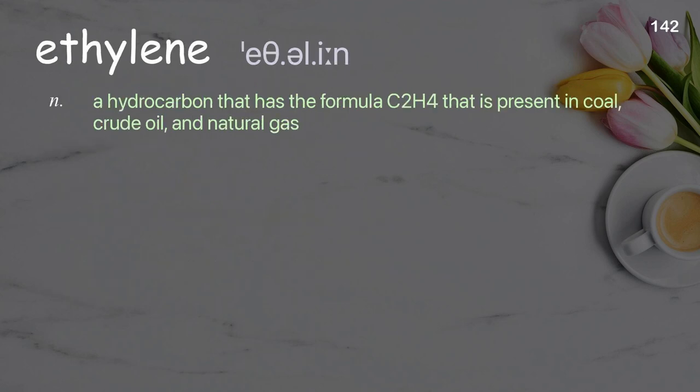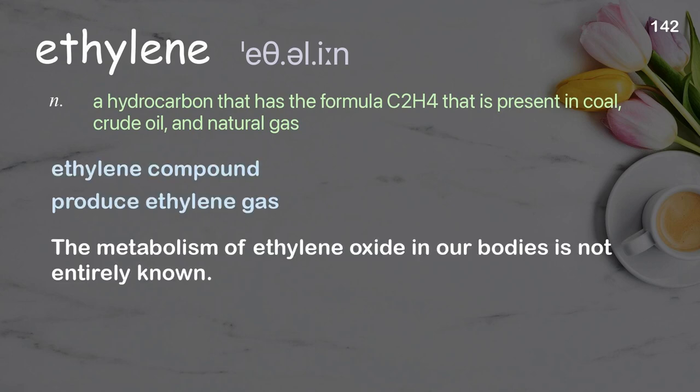Ethylene: a hydrocarbon with the formula C2H4 that is present in coal, crude oil, and natural gas. Examples: ethylene compound, produce ethylene gas. The metabolism of ethylene oxide in our bodies is not entirely known.